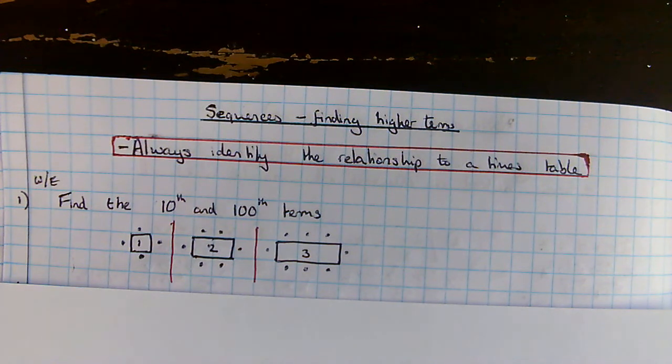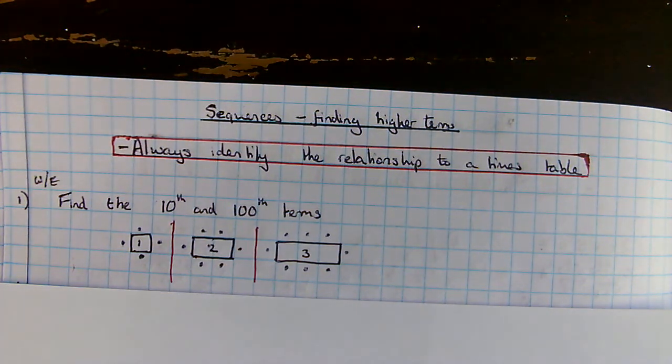The last section of this unit is linear sequences, and there's a number of things we need to do with these. Linear sequences are sequences which go up by the same jump each time and they're very related to times tables. This is a really typical question on a GCSE paper.